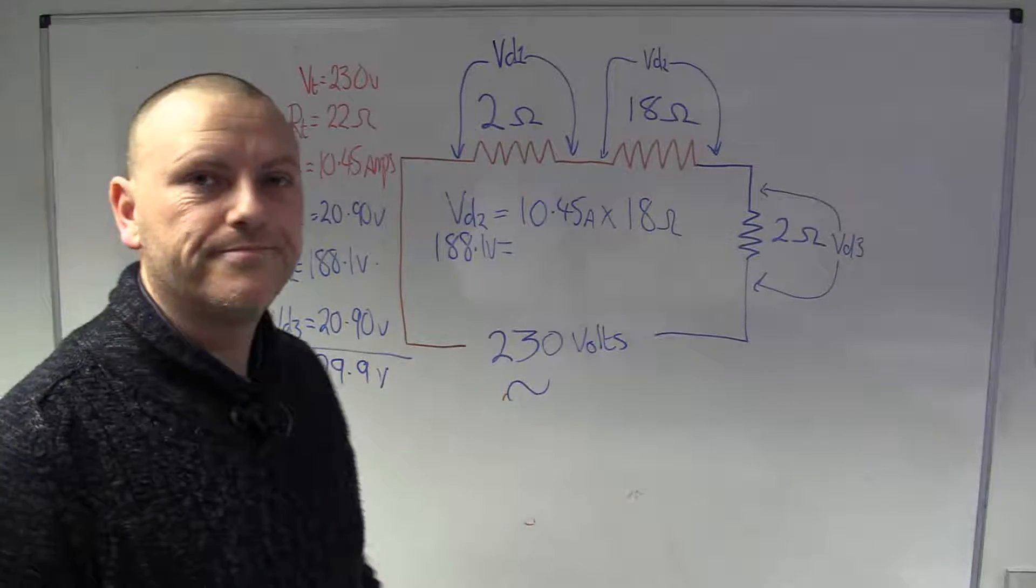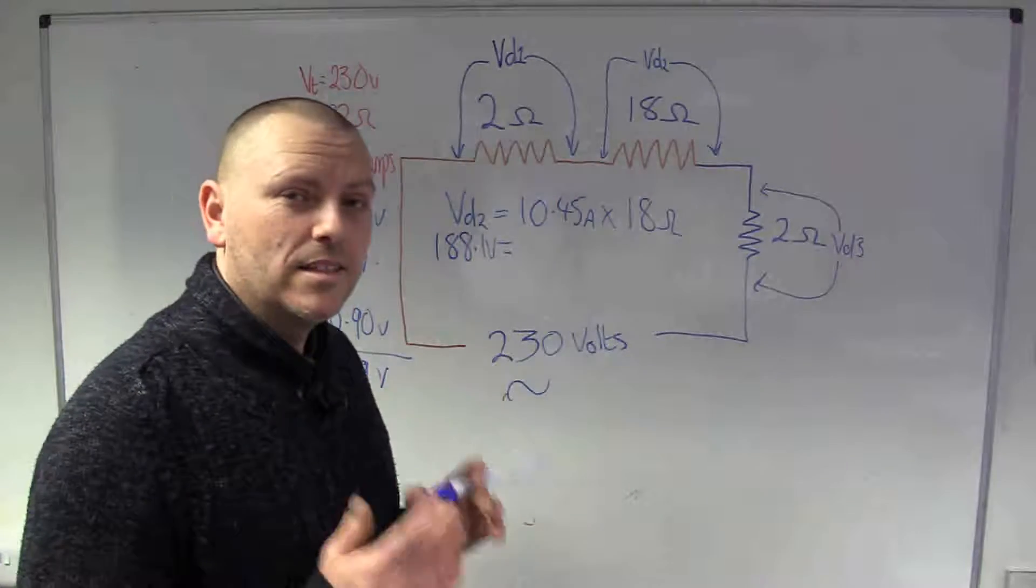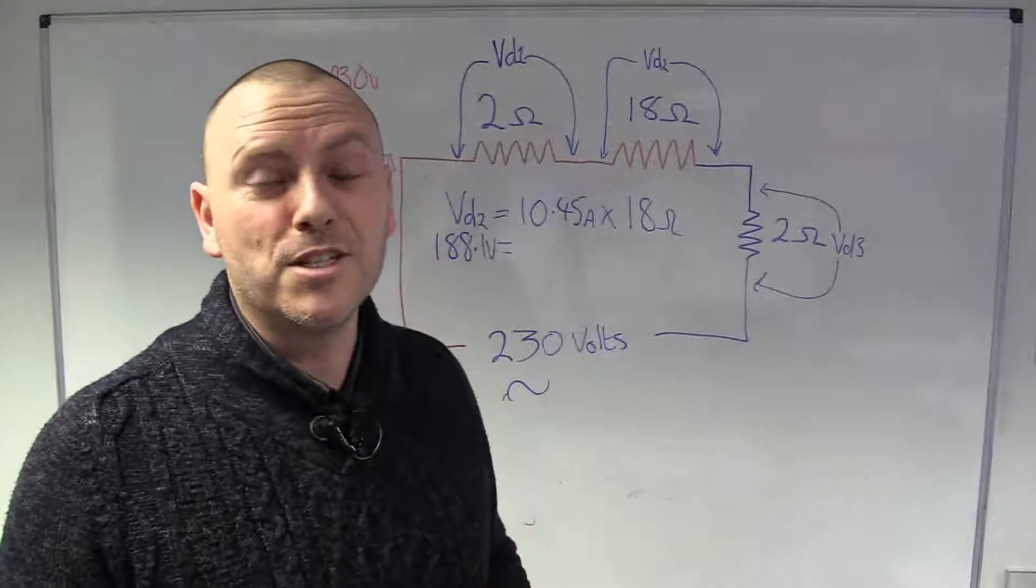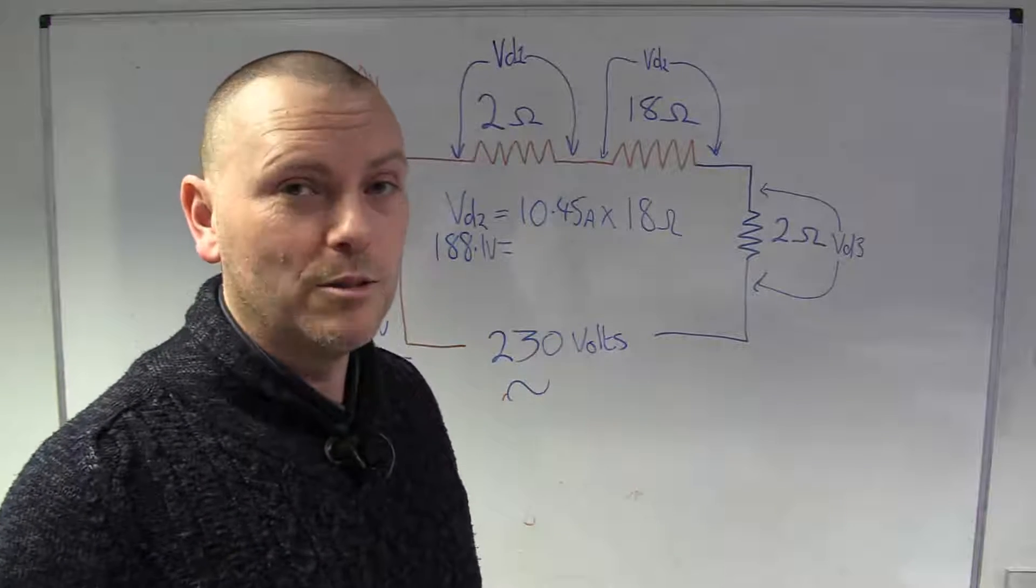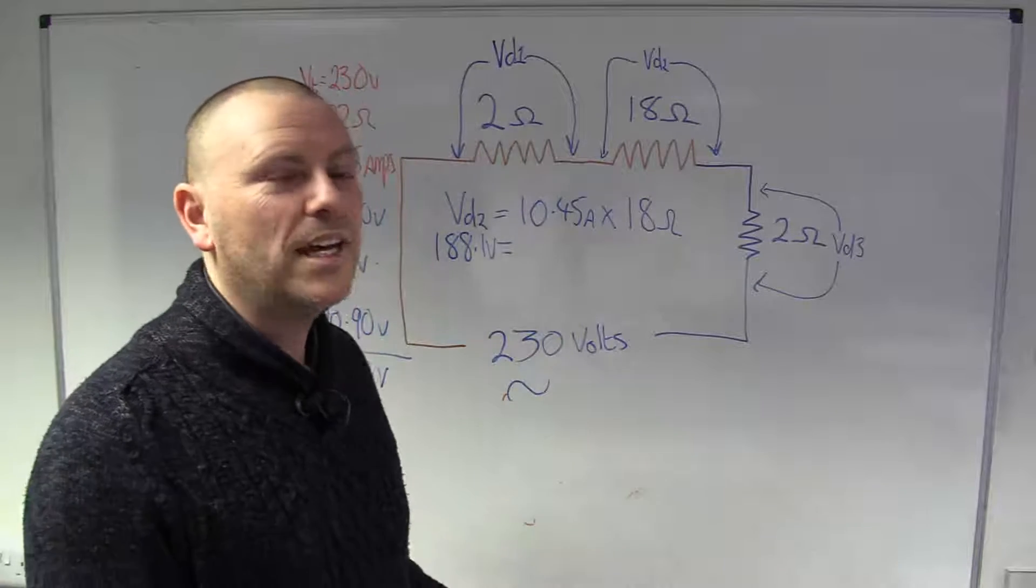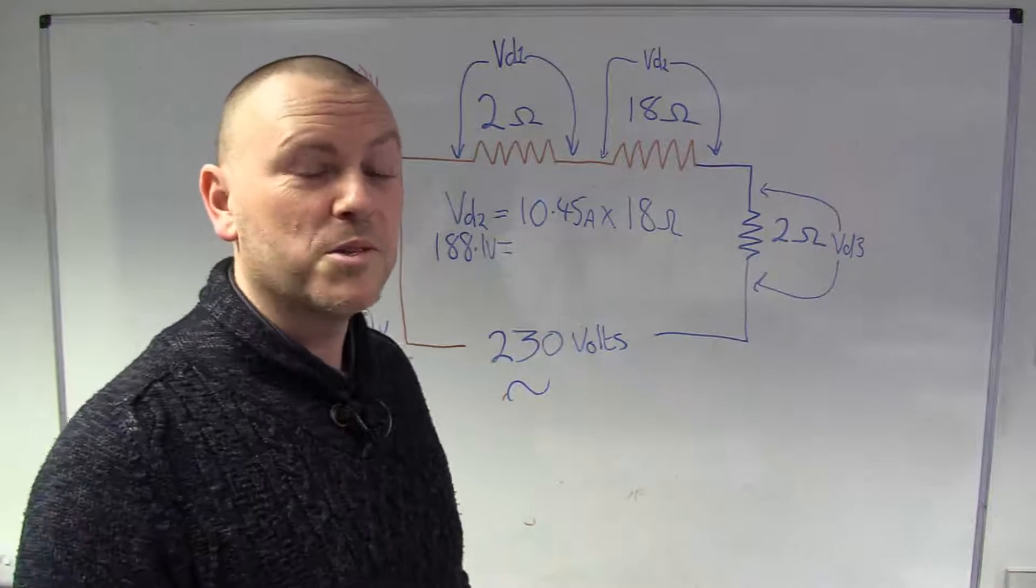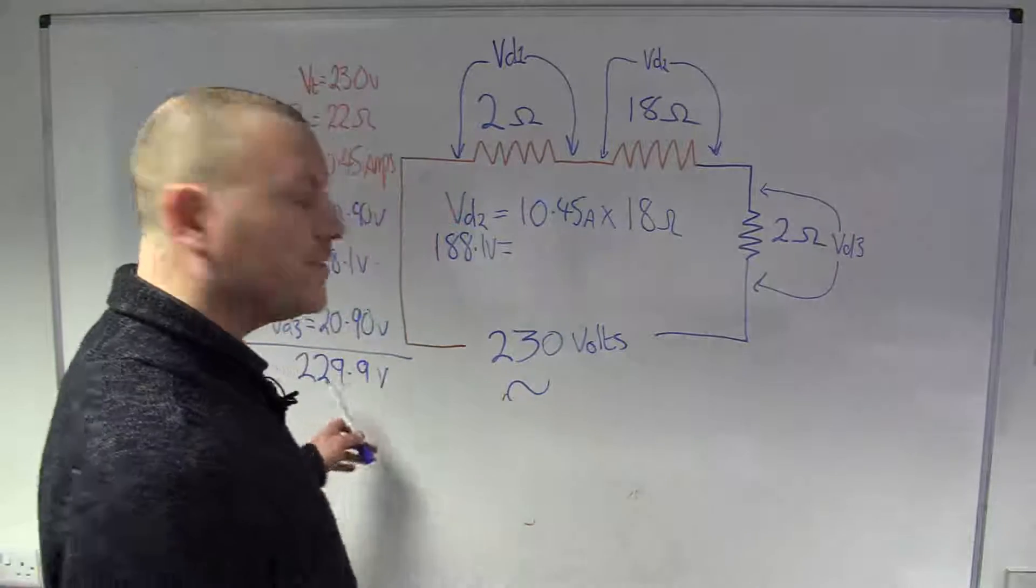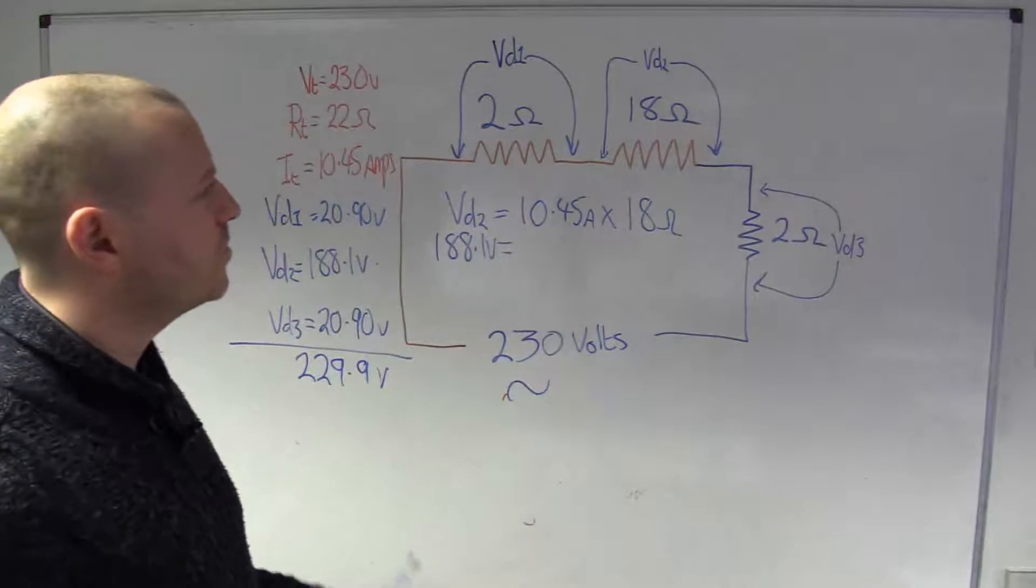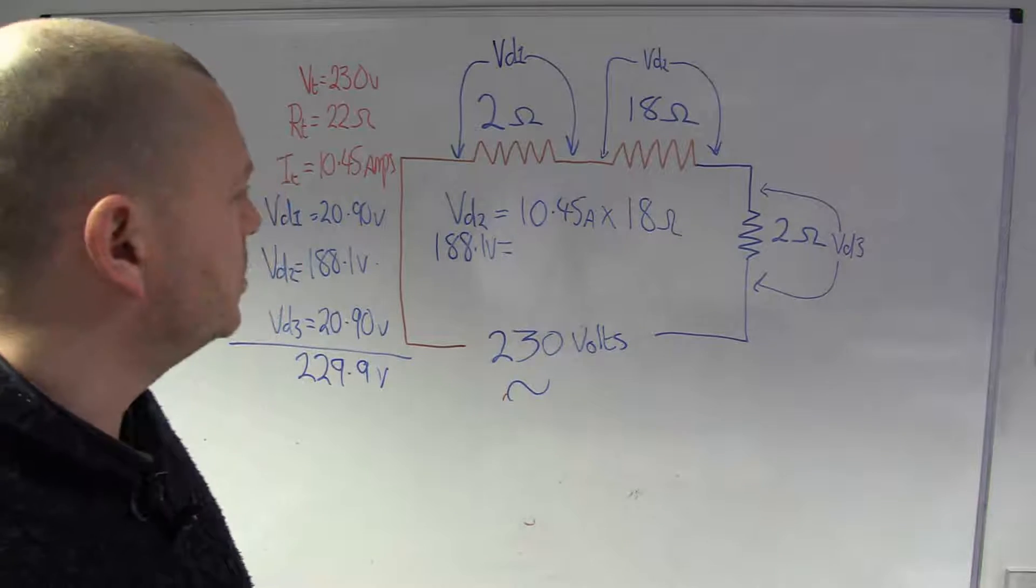Well, you know, rounding errors probably. In the real world it never comes to the supply voltage and that's because there's just losses everywhere. There's losses in the cables there's losses in the terminals so getting it back to that supply voltage is theoretically possible but in practice not possible. But it's going to be very close, always very close and essentially that is how we would analyze a series circuit.